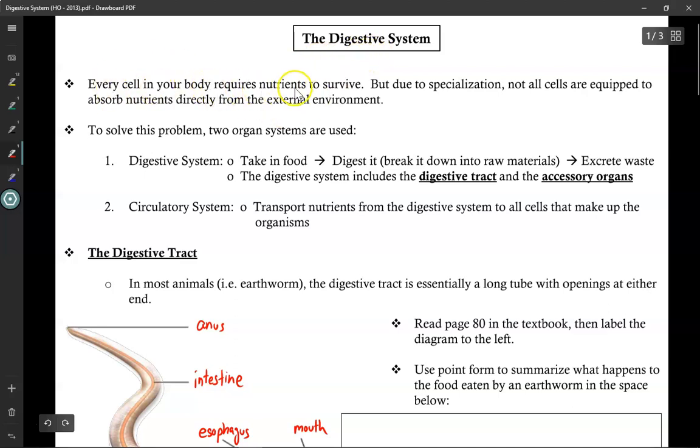Every cell in your body requires nutrients to survive. But due to specialization, not all cells are equipped to absorb nutrients directly from the external environment. So when the cells in my lungs require nutrients, they have to rely on someone else. They are so specialized at absorbing oxygen and releasing carbon dioxide, they don't have the ability to break down food.